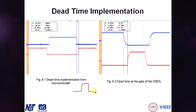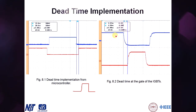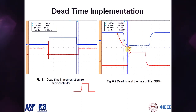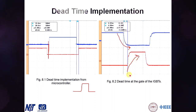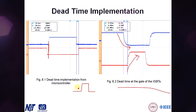This is the dead time implementation. Since IGBTs do not switch ideally, the upper and lower IGBTs in a limb need dead time between turn-off and the other's turn-on. A five-microsecond dead time delay has been provided — it takes five microseconds to turn off, and that time is used for switching on the other IGBT in the same limb.